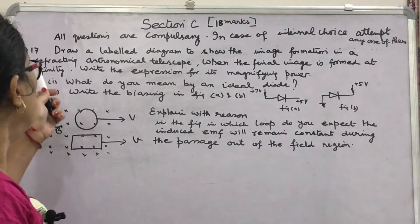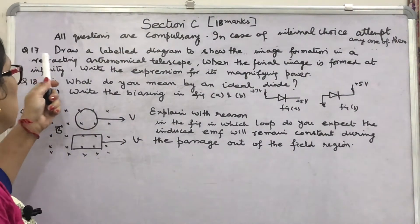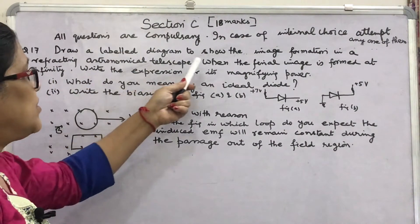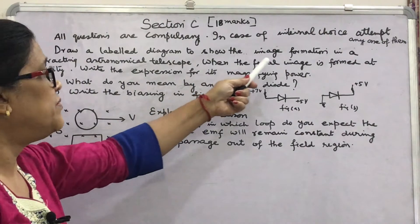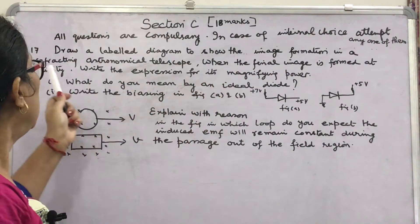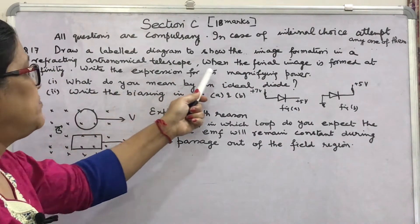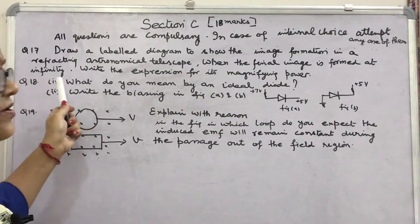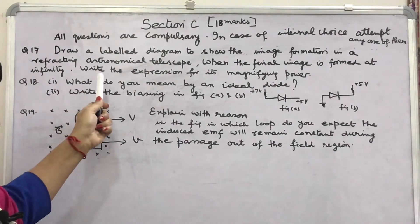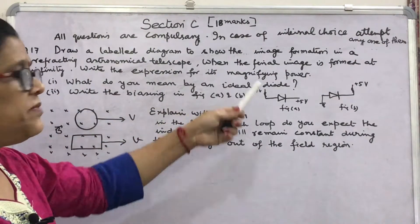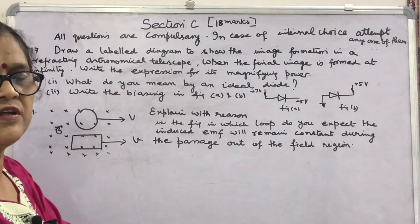Look at the first question, question 17: draw a ray diagram to show the image formation in a refracting astronomical telescope when the final image is formed at infinity. Write the expression for its magnifying power.